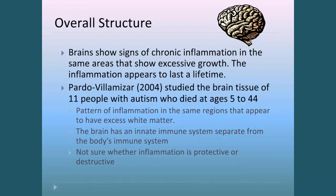What we also know about overall structure is that the brain shows signs of chronic inflammation in those same areas that show excessive growth. The immune system within the nervous system is inflamed in those areas that have more excessive growth. They don't know whether this is a good thing or a bad thing — whether this inflammation is protective or destructive. However, if you've been a teacher of children with autism for a long time, you'll often realize that right before they get very ill, it seems like they're doing so many neat things. So it's possible that that inflammation is the body's response to try and make those pathways and make more connections, but we don't really know that yet scientifically.